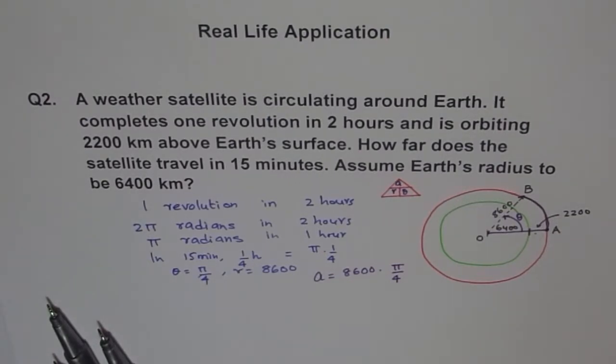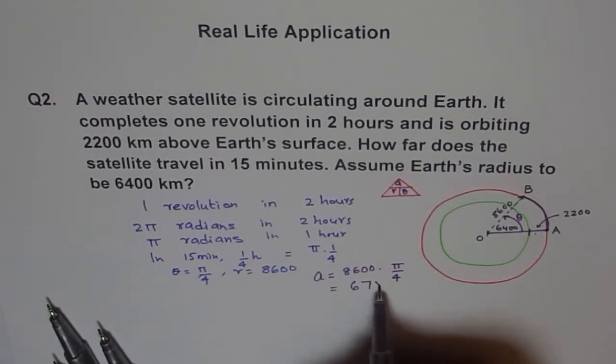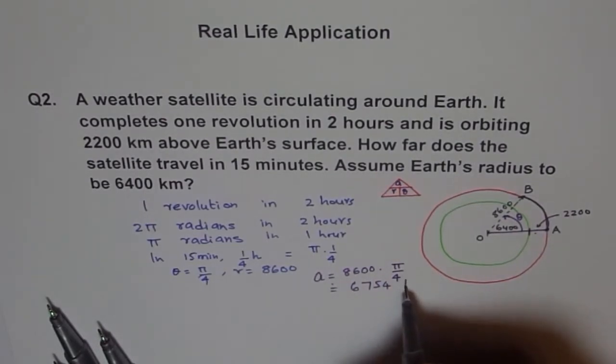Simplify. Simplify. Whenever the pi is there, we need a calculator. So it is 8600, divide by four equals to 2150 times pi equals to 2150 pi. I'll change it to decimals. And it gives me a result which says 6754. We can forget about the decimal point. So many units of kilometers, correct?